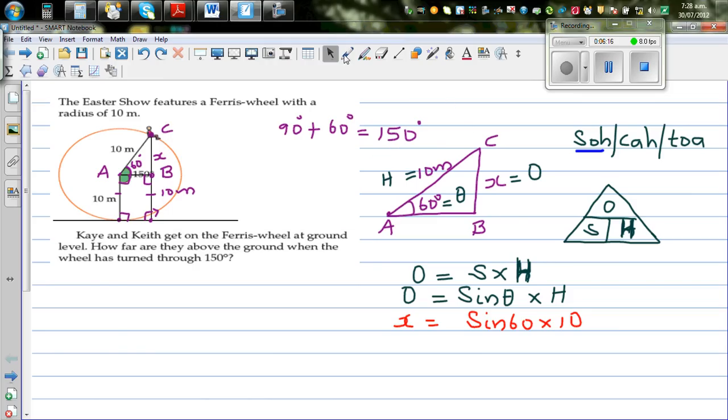I will say this is 8.66 in 2 decimal places. So X is equal to 8.66 meters in 2 decimal places.